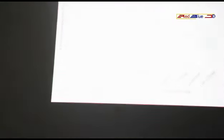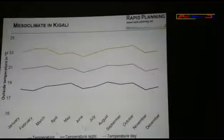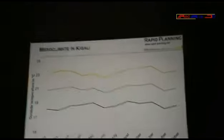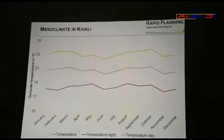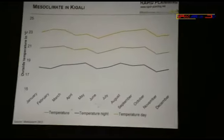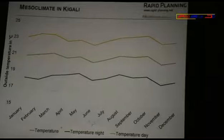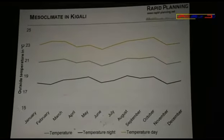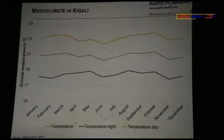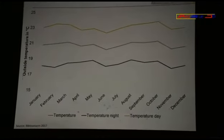We have to take the climate of Kigali and put it in the software, so I will give you a short overview of what we found out about the climate in Kigali. The temperature is an average of day and night of 21 degrees. Over the day it's 23 degrees, and at night it's 18 degrees. It's somehow stable over the whole year — you don't have a cold summer or cold winter.